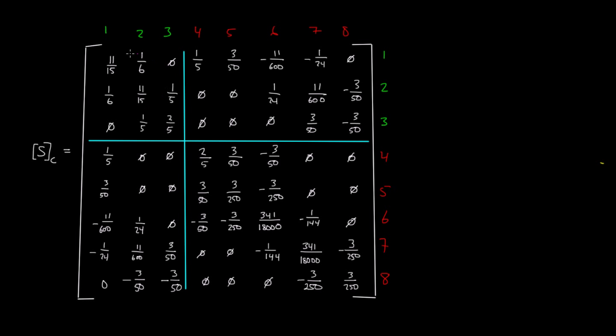This submatrix right here, I'm going to call that matrix S sub UU, which stands for unrestrained rows, unrestrained columns. This matrix right here is going to be S sub UR, unrestrained row, restrained column.